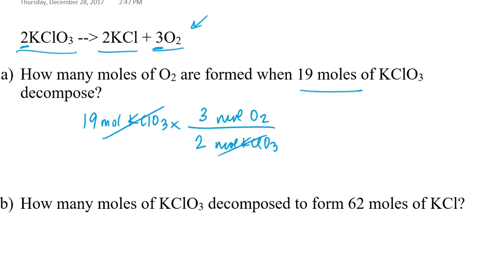So if I cancel out my units of moles of potassium chlorate, and if I take 19, multiply by 3, and divide by 2, then I get 28.5 moles of oxygen. But I was given two significant figures to start the problem. So I really should round this answer to two significant figures. So that would be 29 moles of oxygen.